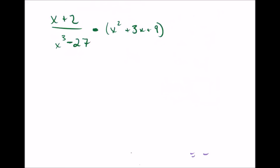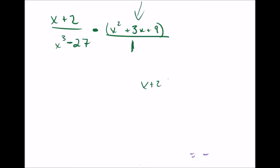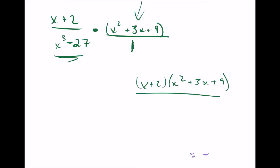Another quick example of multiplication: in this situation, you have a fraction times not a fraction. When this happens, that means it's actually this over 1. So you multiply the tops together: x plus 2 times the top expression, and x cubed minus 27 times that denominator. You can't factor the top, so we're left with x plus 2 times x squared plus 3x plus 9. On the bottom, x cubed minus 27 — that is the difference of cubes, which we've talked about.